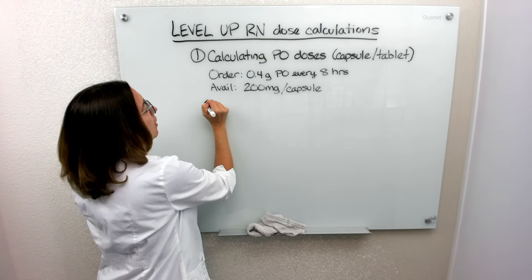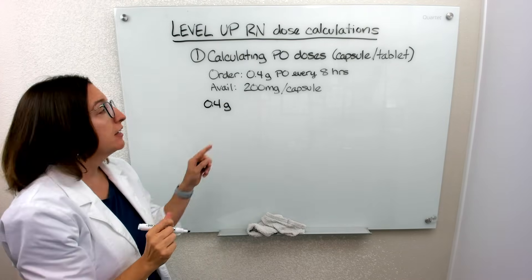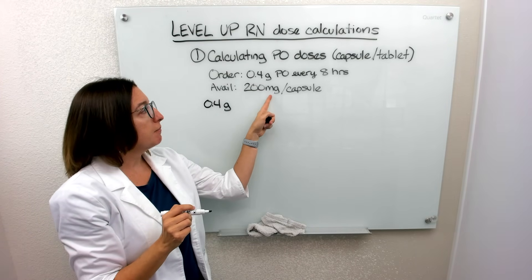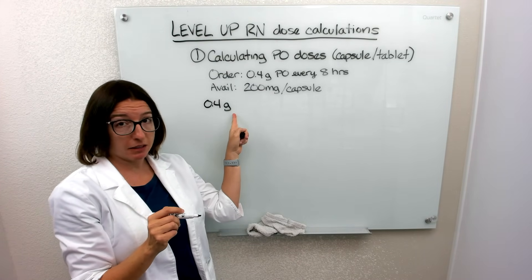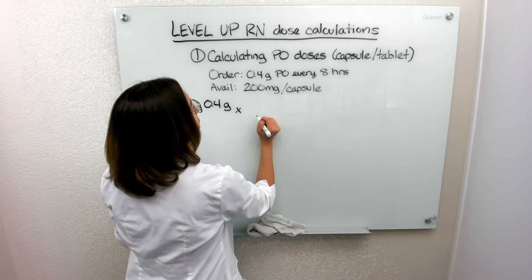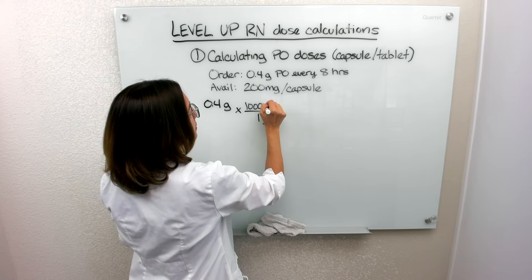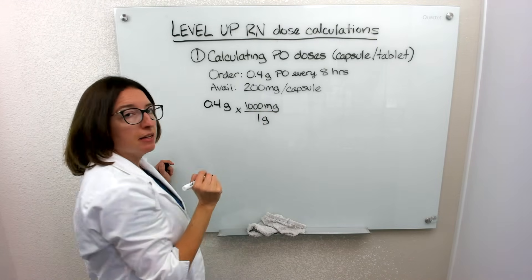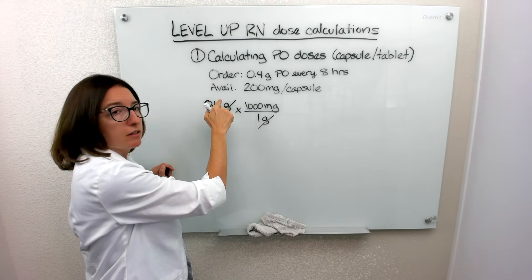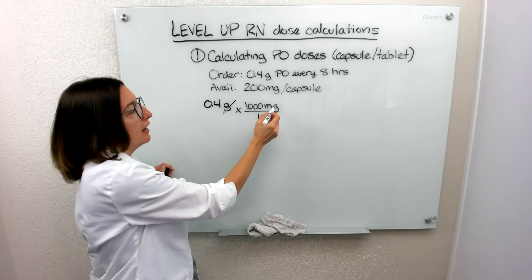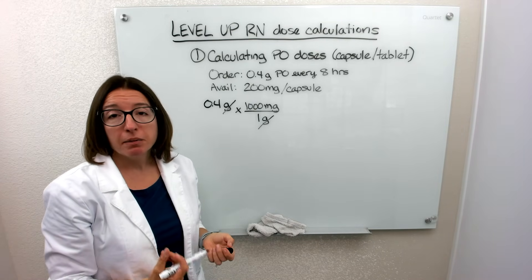Our order — what we need to give the patient — is 0.4 grams. I can already see that because my capsules are in milligrams, I'm going to need to convert these grams to milligrams. So I'm going to multiply: 1 gram is equal to 1,000 milligrams. At this point I can cross out this gram and this gram — one's on top, one's on bottom — and I have milligrams. Now I need to figure out how many capsules my patient should get.